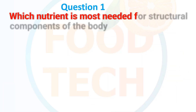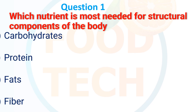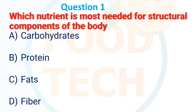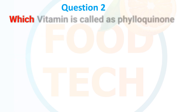Question 1: Which nutrient is most needed as a structural component of the body? A. Carbohydrate, B. Protein, C. Fat, D. Fiber. The answer is B. Protein.